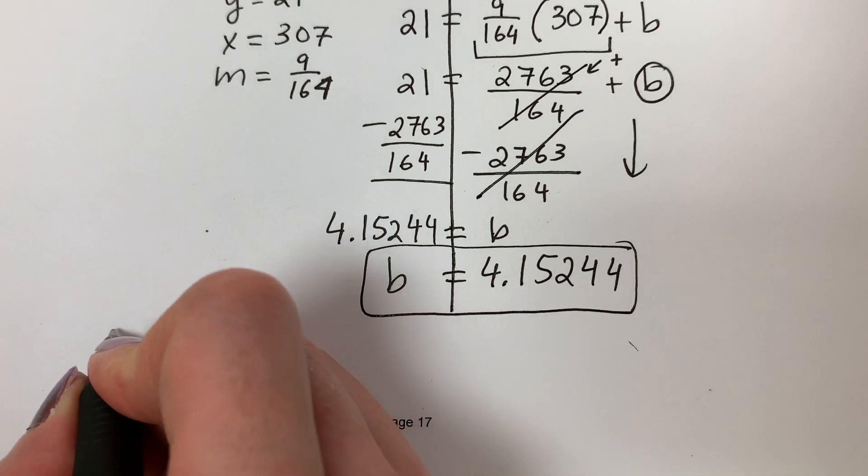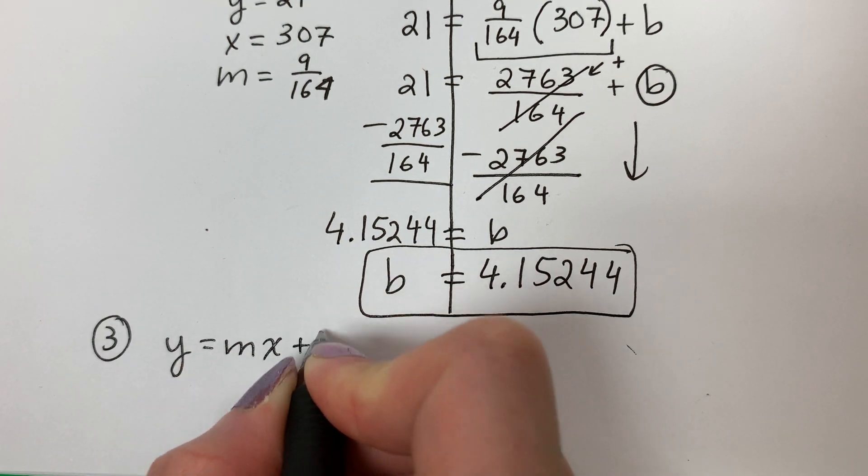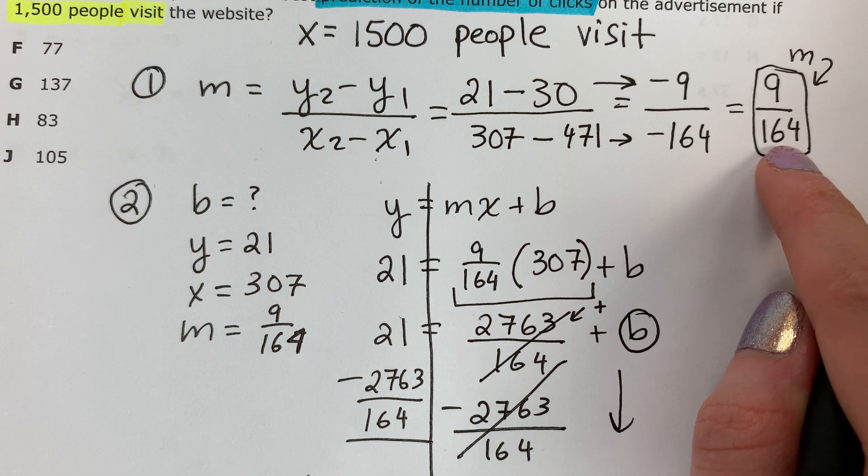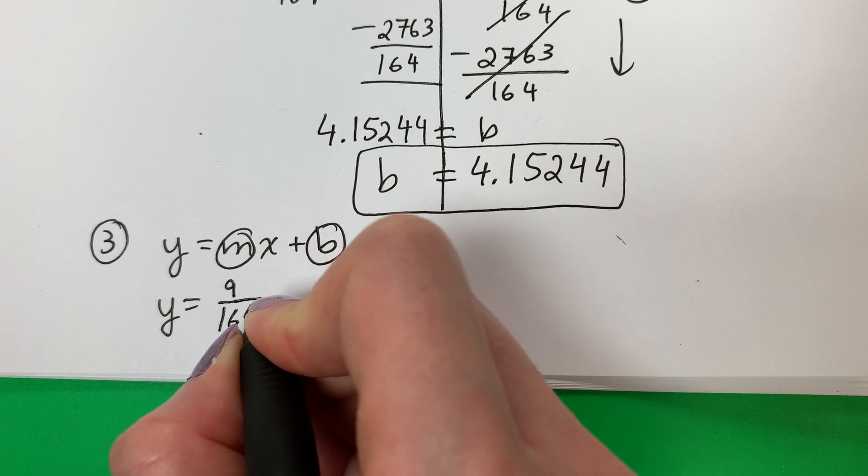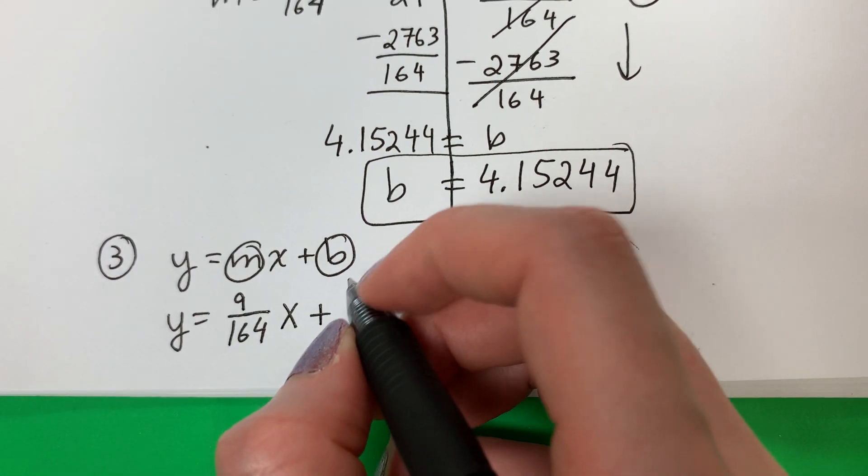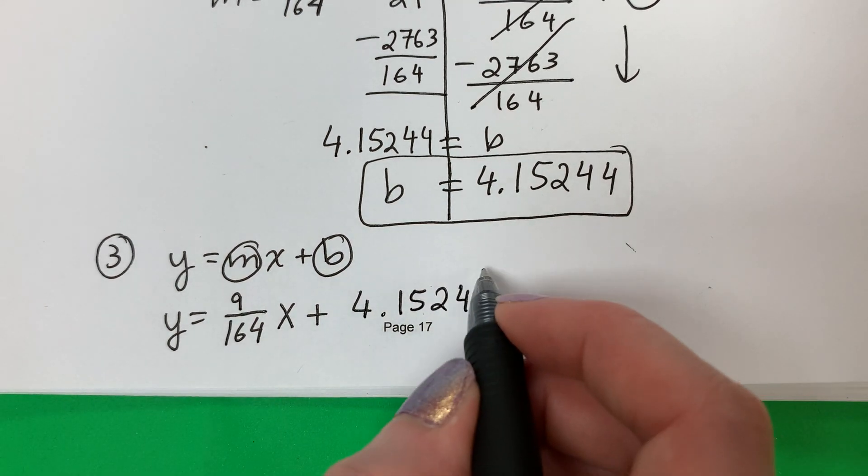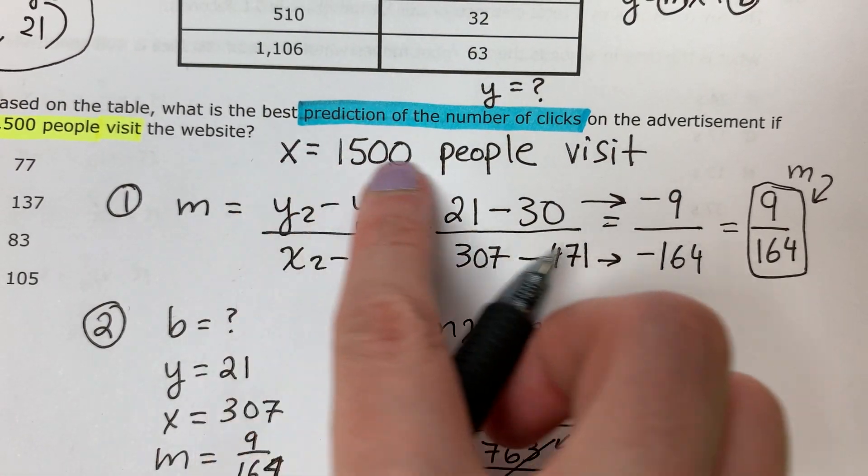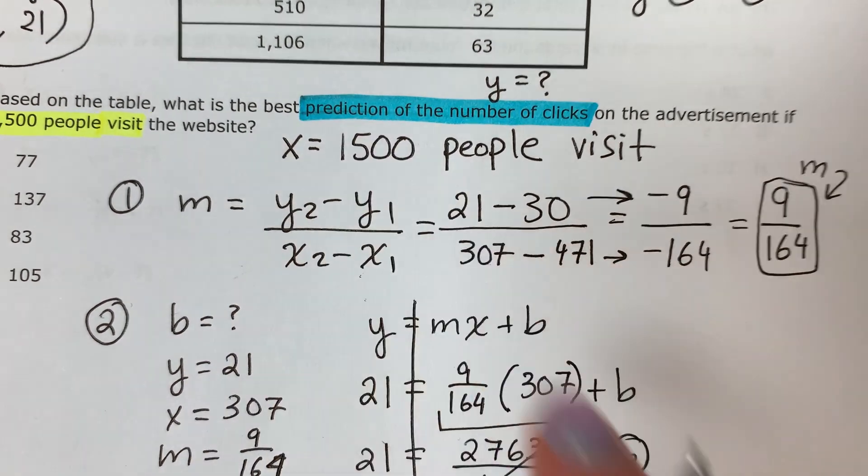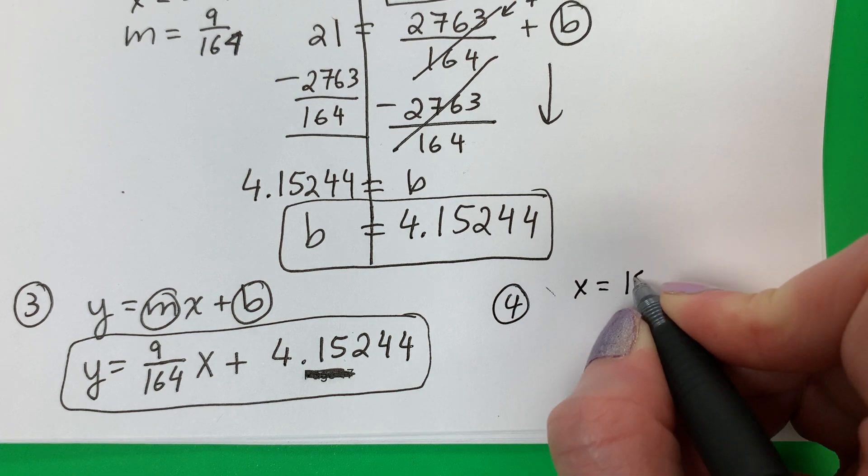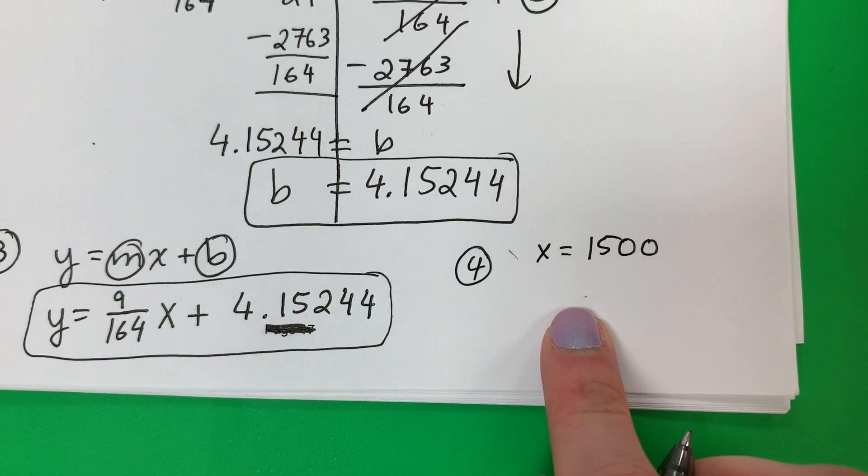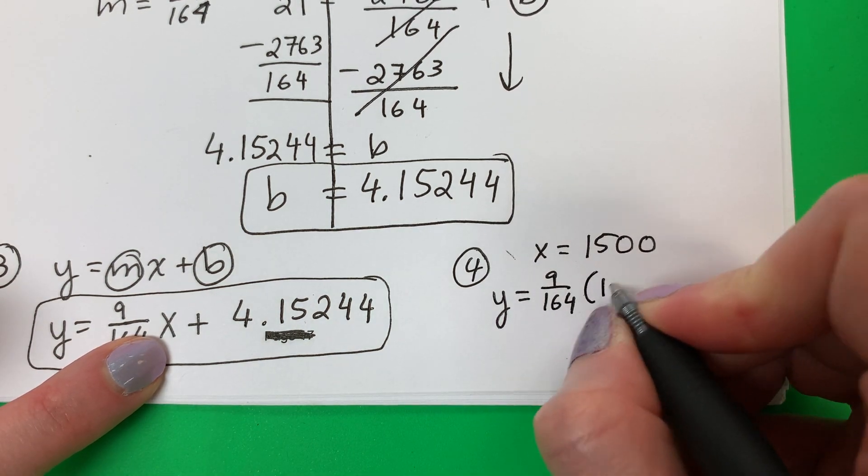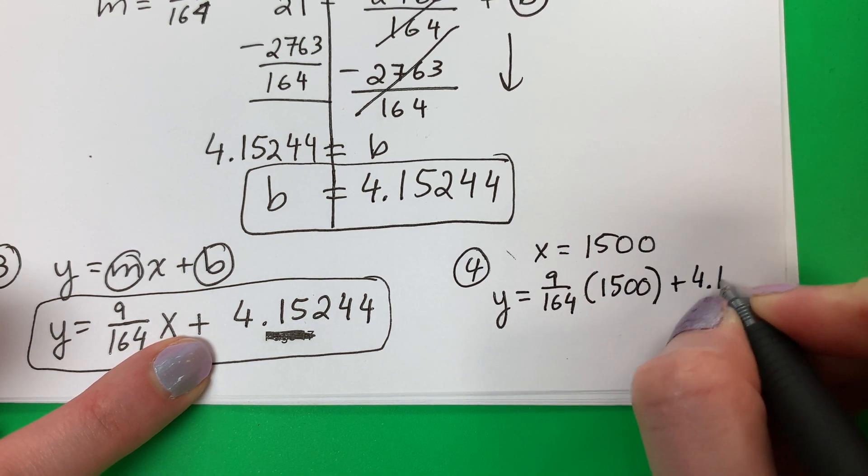Part 3. I'm going to do Y equals MX plus B. Change M, change B. Y equals M, 9 divide 164, X plus B is 4.15244. Not done. Now I have a number for X: 1,500. Let's put it in the formula. Part 4, X is 1,500. Y equals 9 divide 164, parenthesis 1,500 parenthesis, plus 4.15244.